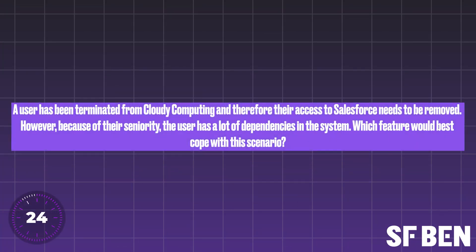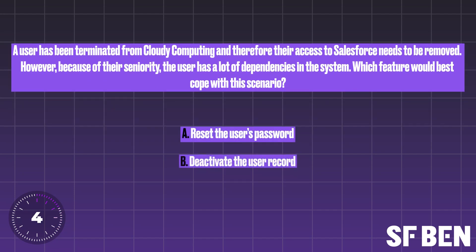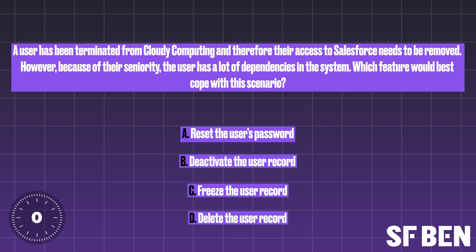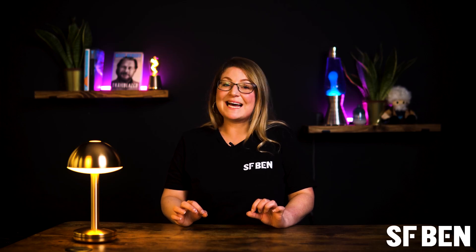Question nine. A user has been terminated from Cloudy Computing and therefore their access to Salesforce needs to be removed. However, because of their seniority, the user has a lot of dependencies in the system. Which feature would be best to cope with this scenario? A: Reset the user's password. B: Deactivate the user record. C: Freeze the user. D: Delete the user. The right answer is C, to freeze the user record. Certain dependencies in Salesforce can prevent you from deactivating a user. In this instance, you may want to freeze a user temporarily until the dependencies have been resolved, allowing for a complete deactivation. Don't forget, you can't delete user records.